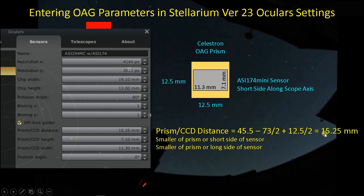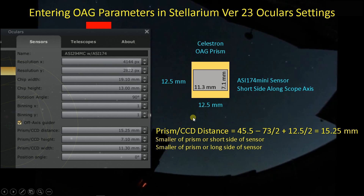You can see that I'm adjusting my prism CCD distance from 15.1 to 15.25. Assuming the short side of the guide camera sensor is aligned with the axis of the scope, this is what it would look like — the long dimension of the sensor is perpendicular to the axis of the telescope. The prism CCD height is the sensor dimension parallel to the axis of the scope, and the prism CCD width is the dimension perpendicular to the axis of the scope. You pull these sensor dimensions from ZWO or whoever manufactures your guide camera, and for the prism dimensions from Celestron's off-axis guider information. That's all the information needed to make the view compatible with version 23.